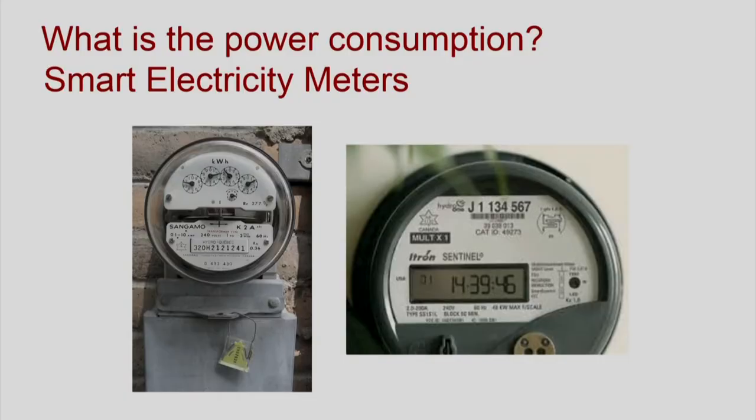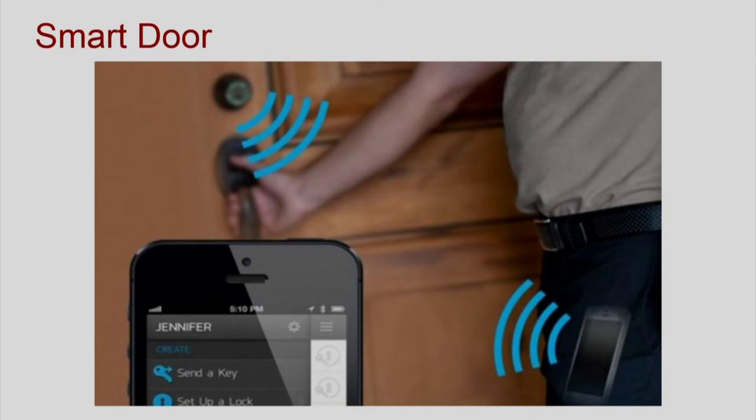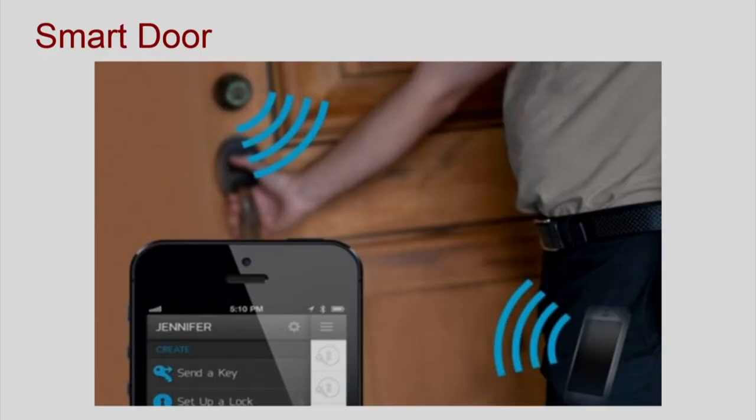There is something more — we have dependence on a whole bunch of sensors. For example, we are going to use smart electricity meters to tell us how much energy will be consumed in cooling the auditorium. Another example would be a smart door. A smart door will allow entry only to those people who have access to the room, which could be made possible by having access privileges stored in their smartphones, read by the door.